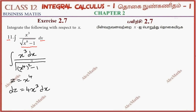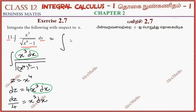Now, the numerator term is x³ dx. That is why 4 appears — dz by 4 is equal to x³ dx. So we can replace the numerator with dz/4, and the denominator becomes z² minus 1. So 1/4 is our common factor.